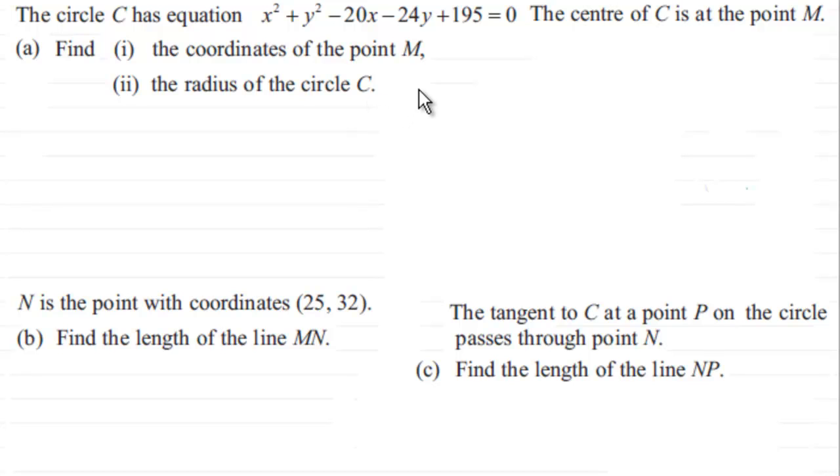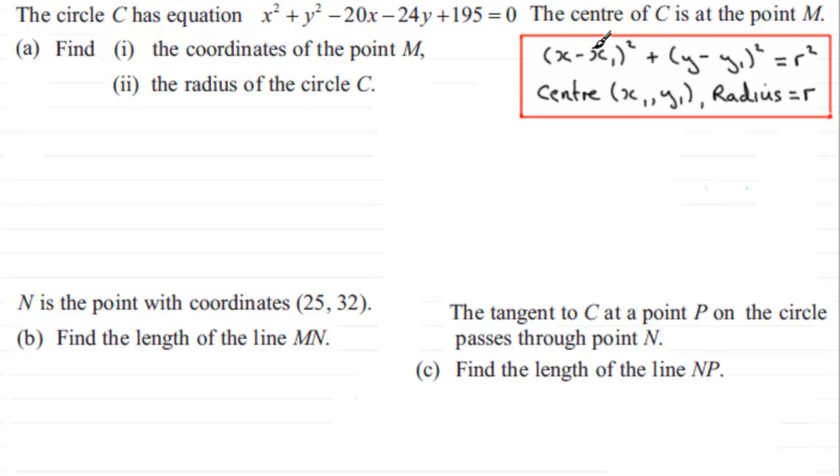Now just as a brief reminder, you should be familiar with the general form of the equation of a circle. It's (x - x₁)² + (y - y₁)² = r². The centre has coordinates (x₁, y₁) and the radius is given by r. So in order to do this, we've got to take our form of the equation and complete the square. I'm assuming you're familiar with completing the square; if not, you can always go on my website examsolutions.net and I've got videos on that.